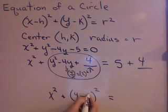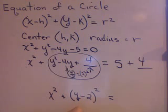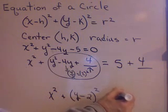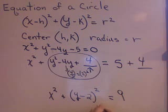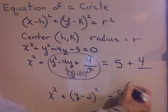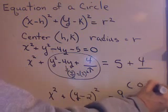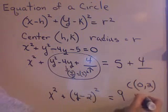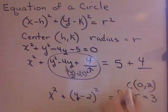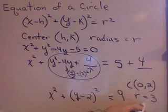What squared gives me 4? 2. That's why I leave the 2 there. Don't do all of this stuff in your head. So, x squared plus y minus 2 squared equals 9. Now, can I identify the center? The center is 0, 2, and the radius is 3, because r squared is 9, so r is 3.